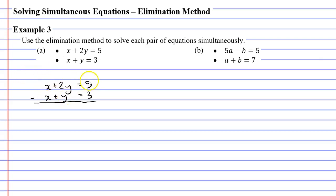We'll do this one column at a time. x minus x is zero, so they cancel each other out. 2y minus y gives me one y, or just y. Copy the equal sign down. 5 minus 3 gives me 2. This has worked really well because I already know what y equals — y equals 2.